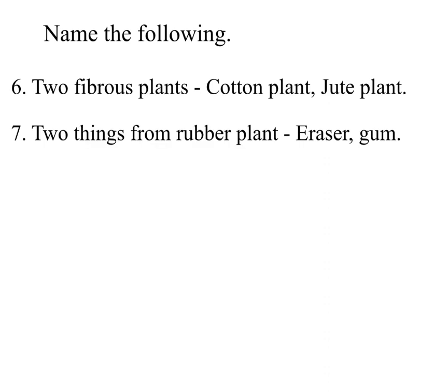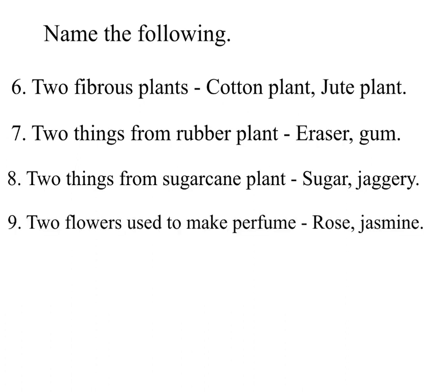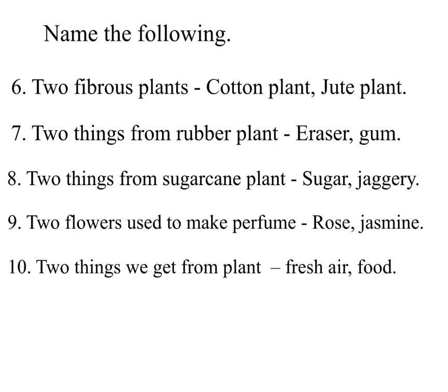Continuing: 7. Two things from the rubber plant – eraser, gum. 8. Two things from the sugarcane plant – sugar, jaggery. 9. Two flowers used to make perfume – rose, jasmine. 10. Two things we get from plants – fresh air.